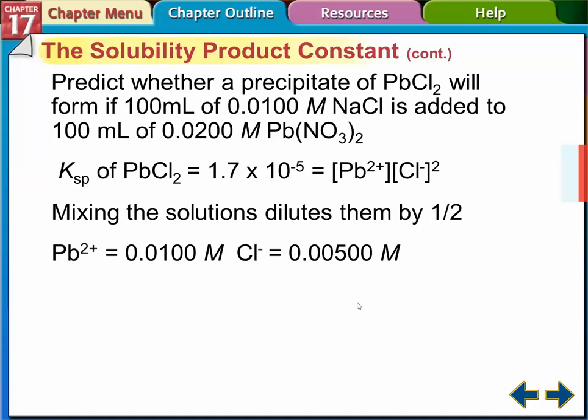Okay. So mixing the solutions dilutes them by half. So instead of having the chlorine being in 100 milliliters, now the chlorine's in 200, right? Because there's no chlorine here. So we put these two together. So we have to divide these molarities by half. So the lead is 0.02, so that goes to 0.01. The chlorine is 0.01, so that goes to 0.005. So these are the initial concentrations of our lead and chlorine when we mix them together before any reaction takes place, right?